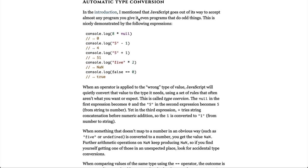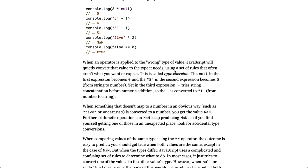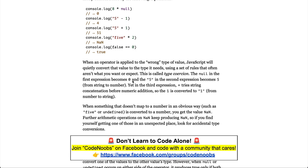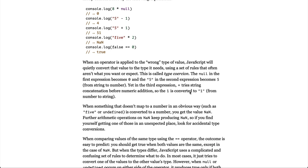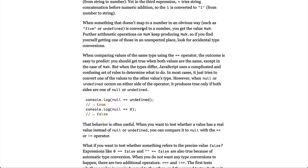Automatic type conversion. In the introduction, I mentioned that JavaScript goes out of its way to accept almost any program you give it, even programs that do odd things. This is nicely demonstrated by the following expressions. When an operator is applied to the wrong type of value, JavaScript will quietly convert that value to the type it needs, using a set of rules that often aren't what you want or expect. This is called type coercion. The null in the first expression becomes zero and the five in the second expression becomes five from string to number. Yet in the third expression, plus tries string concatenation before numeric addition, so the one is converted to a one from number to string. When something that doesn't map to a number in an obvious way, such as five or undefined, is converted to a number, you get the value not a number. Further, arithmetic operations on not a number keep producing not a number, so if you find yourself getting one of those in an unexpected place, look for accidental type conversions.